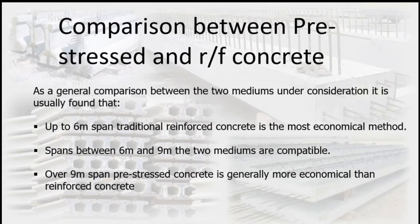Comparison between pre-stressed and reinforced concrete: As a general comparison, up to 6 metres span, traditional reinforced concrete is the most economical method. For spans between 6 and 9 metres, the two methods are comparable. Over 9 metres span, pre-stressed concrete is generally more economical than reinforced concrete.